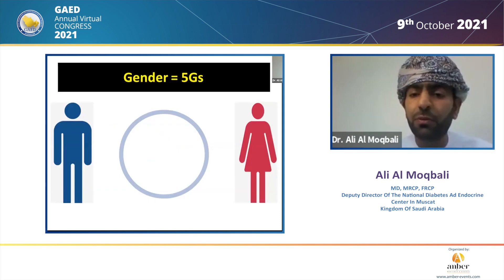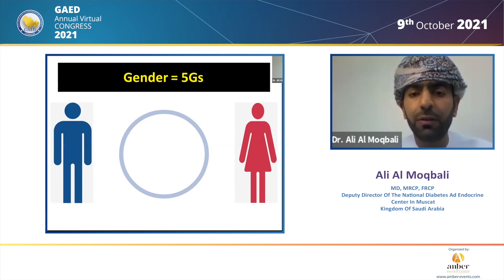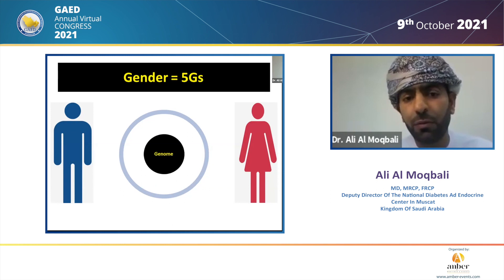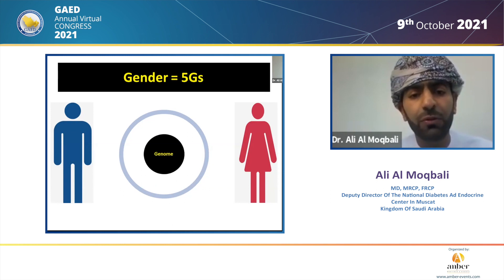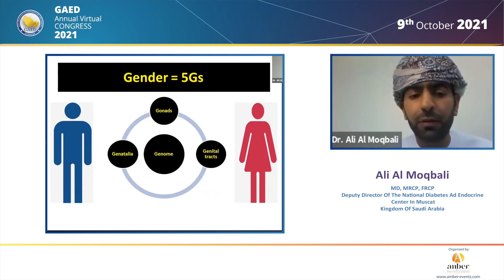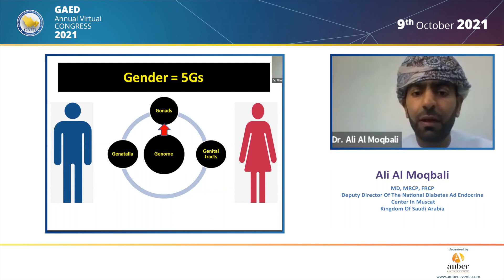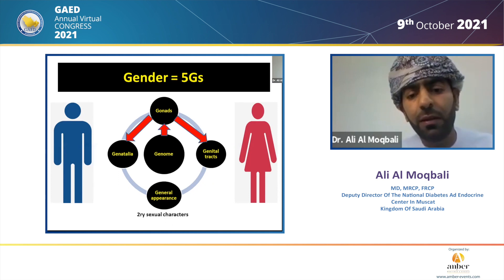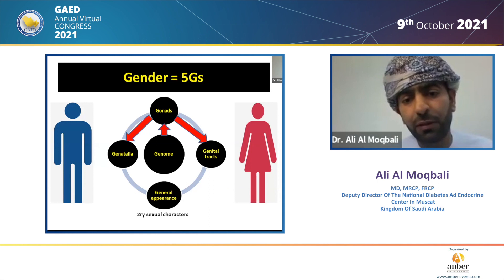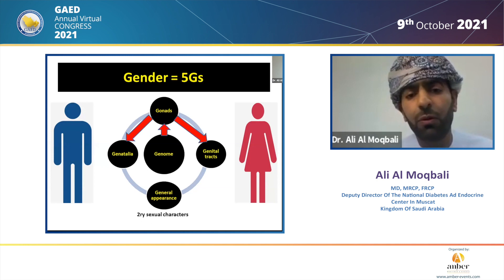The difference between males and females in terms of sexual organs and characters lies in five Gs: genome, which contains the chromosomes and genes; gonads; genital tracts; genitalia; and the last G is general appearance — the secondary sexual characters. Genome affects everything. It affects the gonads, which affect the genital tracts and genitalia. Patients with DSD would have a problem at one or more of these Gs.